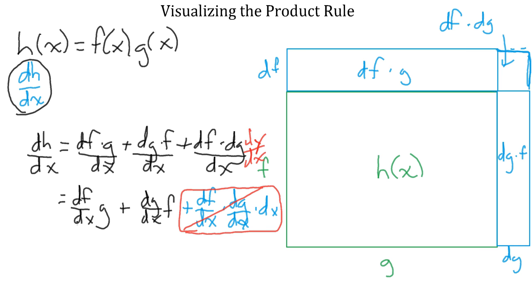Therefore, we have the derivative of h as df over dx times g plus dg over dx times f. Alternatively, we can write h prime of x equals f prime of x times g plus g prime of x times f.